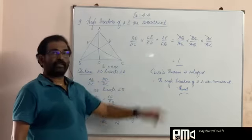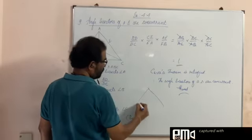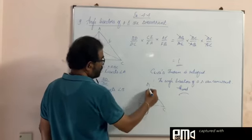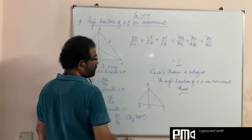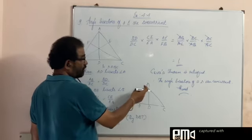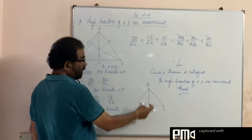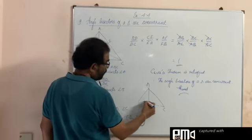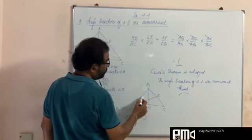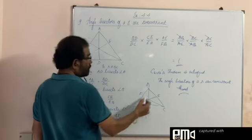You remember Ceva's theorem. You want a triangle ABC. AD is a cevian. Cevian means the line drawn from the vertex to the opposite side. Line drawn from any vertex of the triangle to the opposite side is called a cevian. So AD is a cevian, BE is a cevian, CF is also a cevian. So three cevians: AD, BE, CF.